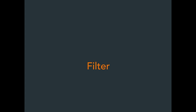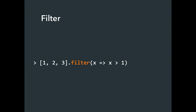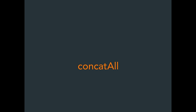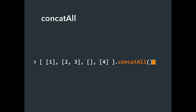Filter — almost the same as map, but we apply a test function that returns true or false, and only items that pass the test make it into the new collection unchanged. ConcatAll is a function that doesn't exist in JavaScript but would be easy to write. It takes a two-dimensional array and flattens it by one dimension — not recursively, just makes it n-minus-1 dimensions. Notice that the empty collection just disappears — that's going to become important later.